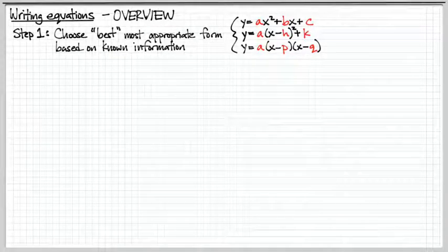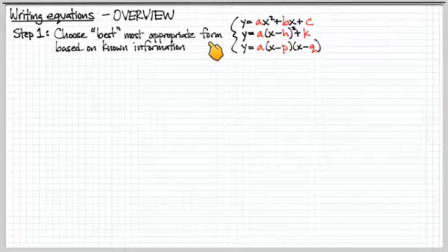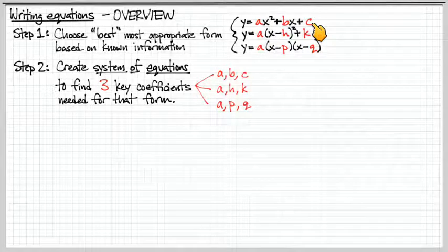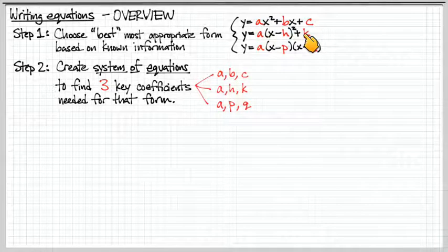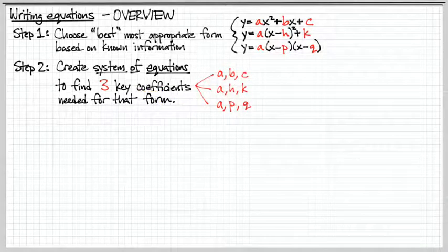So as an overview, the basic concept is this: we take the data points we have and use one of the three different forms, choosing the best form based upon the data. If we use standard form, we need to figure out A, B, and C. If vertex form is best, we need to find A, H, and K. And if intercept form is best, we need to find A, P, and Q. So we set up equations to find those three unknown coefficients.